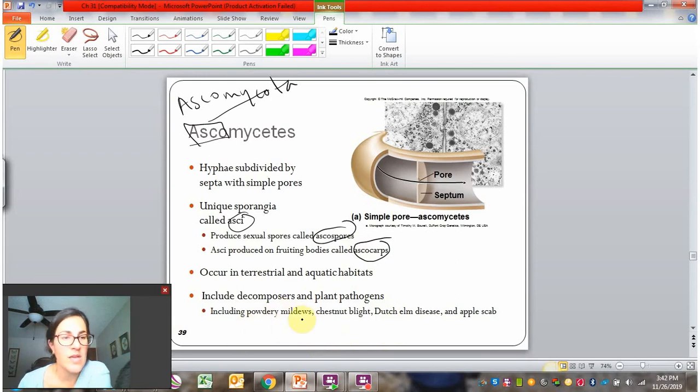Powdery mildew is a common problem on zucchini. It's like a white powder on zucchini or pumpkins. It can also affect tomatoes and peppers as well. Chestnut blight and Dutch elm disease are both diseases that have had major impacts on tree populations. Chestnut blight was transported to the United States from Asia and was a fungal disease that actually killed off American chestnut trees. The Chinese chestnut trees in Asia had some immunity to the disease, so they were able to survive with it. But when it came to the United States, it caused the extinction of the American chestnut. Dutch elm disease is currently spreading across the United States and killing off elm trees throughout major parts of the United States. And then apple scab is a big problem for apple growers. It causes a little unsightly piece on the skin. If you've eaten organic apples, you've probably seen them on organic apples, and we'll see a picture of those later.